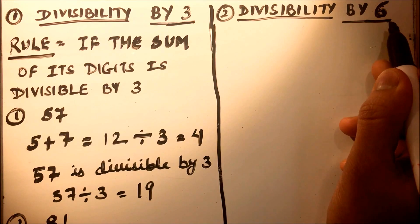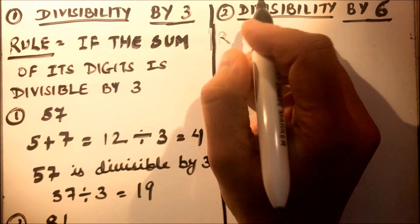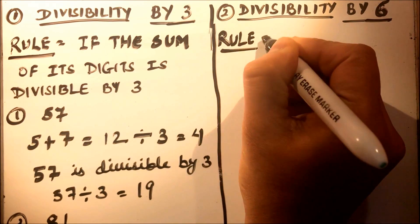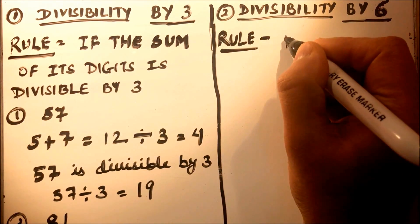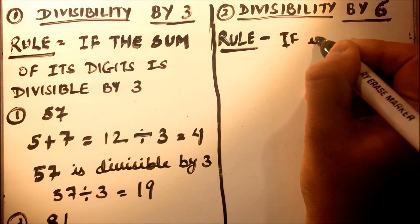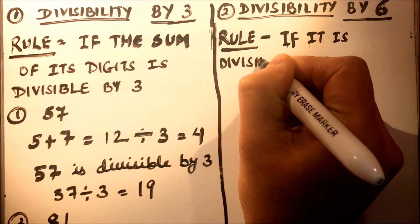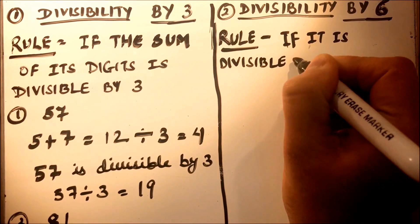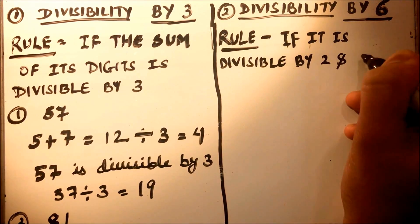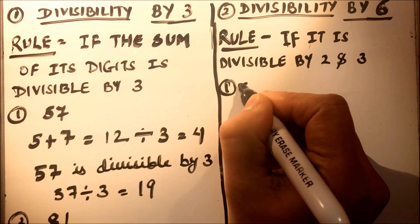The rule for divisibility by 6 is: a number is divisible by 6 only if it is divisible by both 2 and 3.